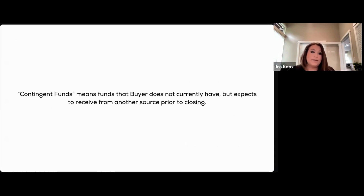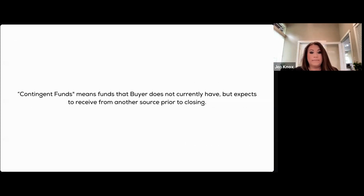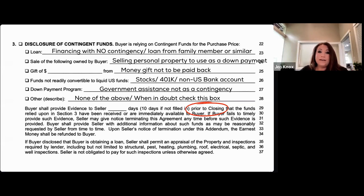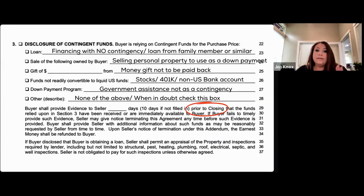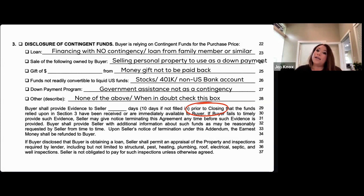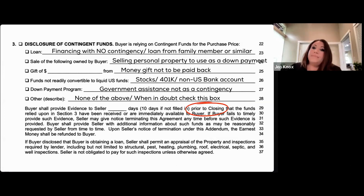Contingent funds means funds that a buyer does not currently have but expects to receive from another source prior to closing. Different types include home sales and loans. Make sure you are not re-disclosing a loan already disclosed on the 22A. If there is no financing contingency, the loan box on the 22EF is the correct place to disclose a loan — meaning the loan is being used but the buyer is waiving their right to retain earnest money if the loan fails.